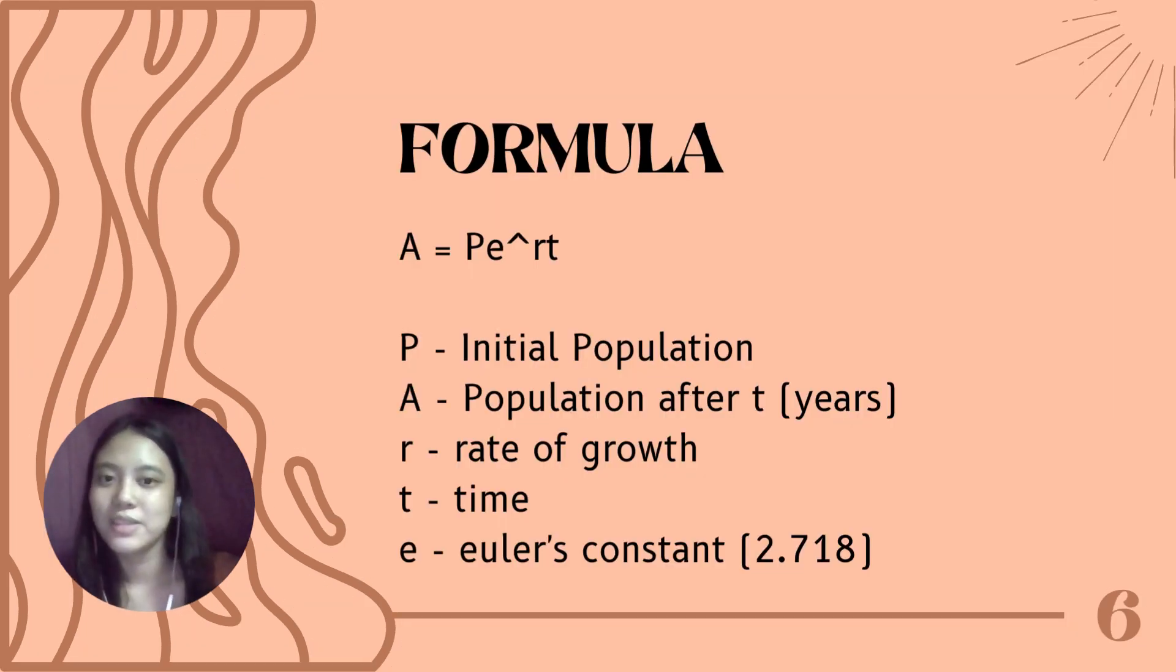Let's recall to better understand our formula. The formula is A equals Pe raised to rt. P is initial population. A is the population after t years. R is the rate of growth. T is time. E is Euler's constant with a value of 2.718.